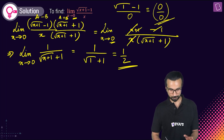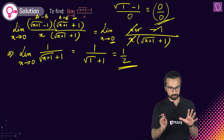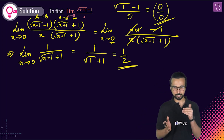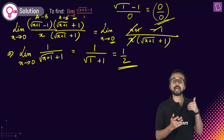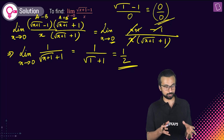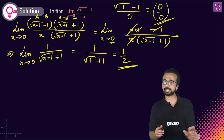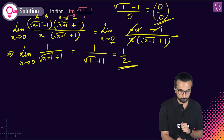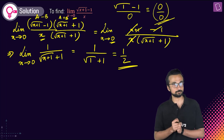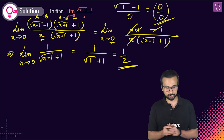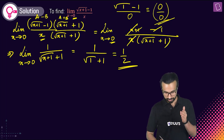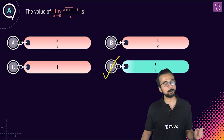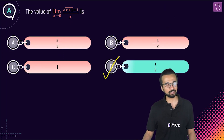So we saw that we had an indeterminate zero by zero form, so we used rationalization. Rationalizing the numerator caused it to cancel with x in the denominator, removing the indeterminate form. Our final answer is option D: one by two.